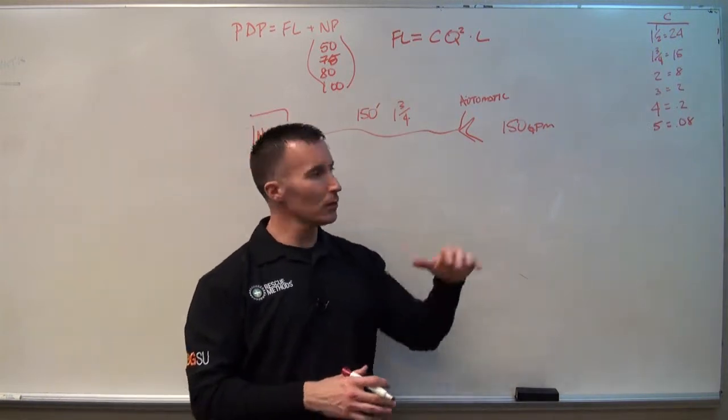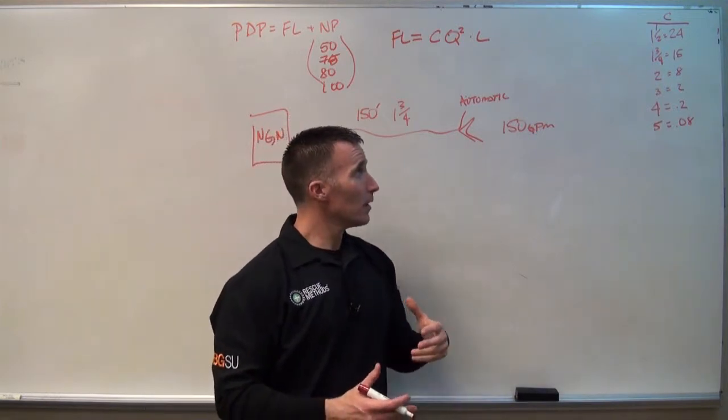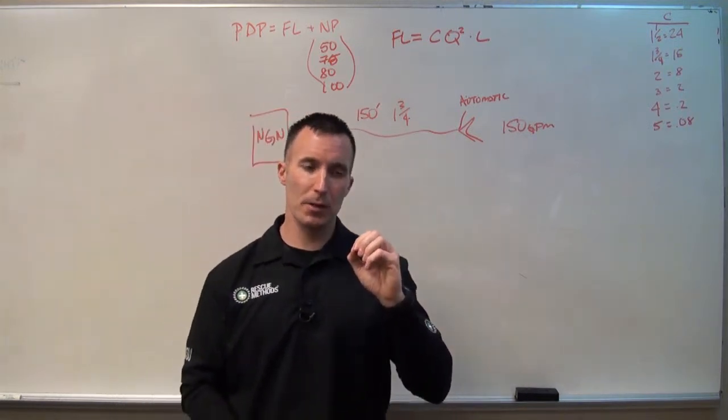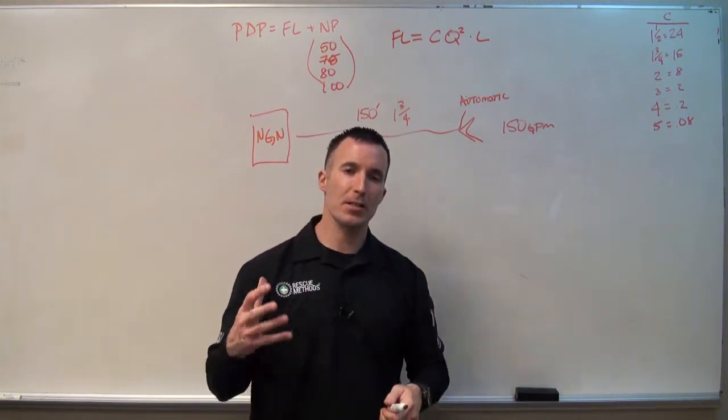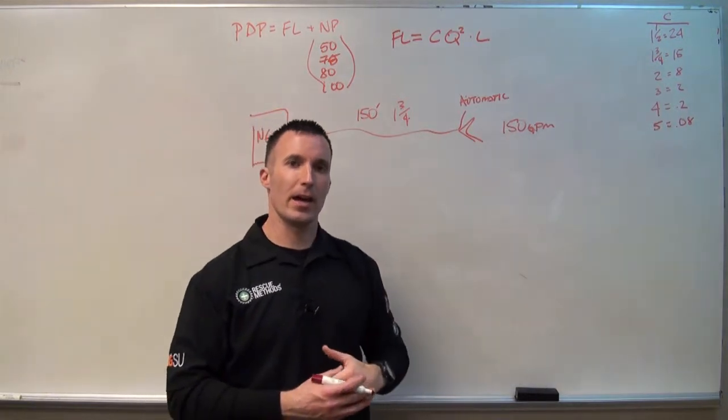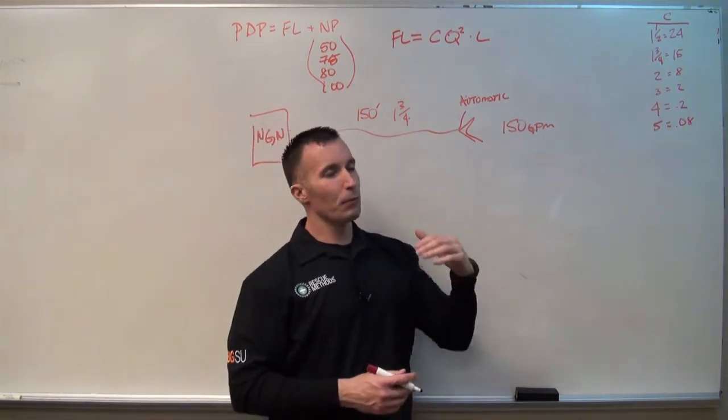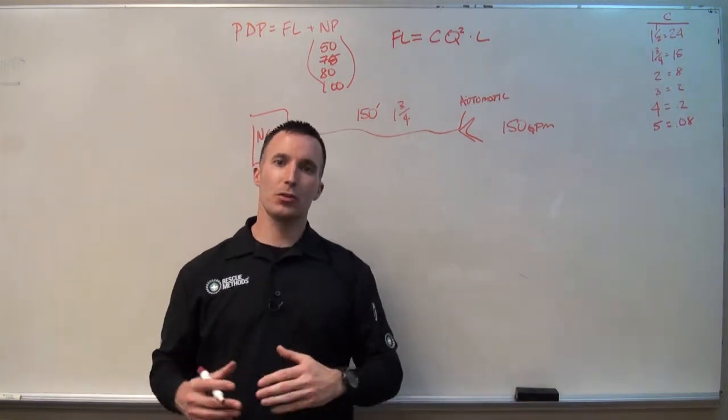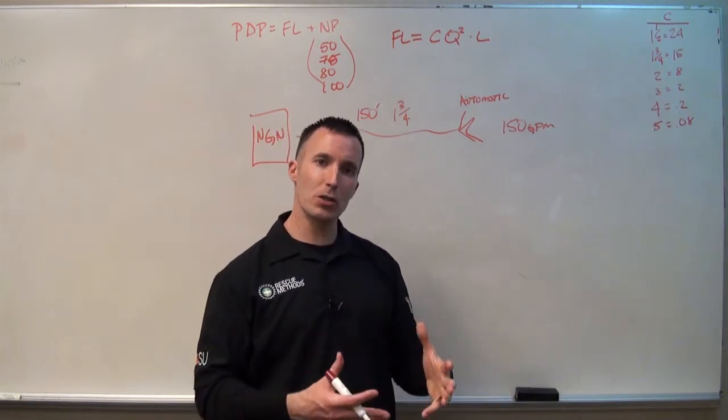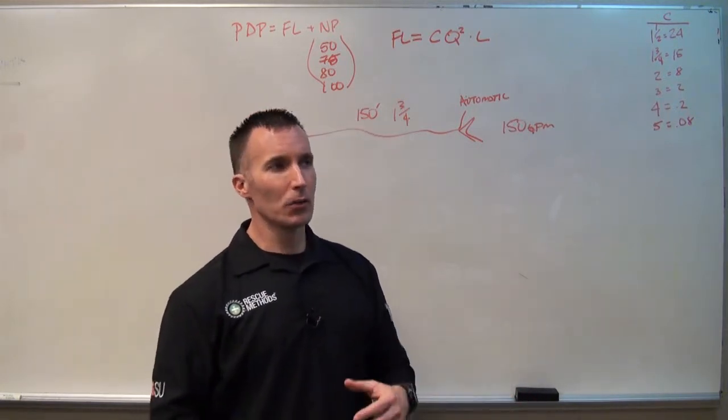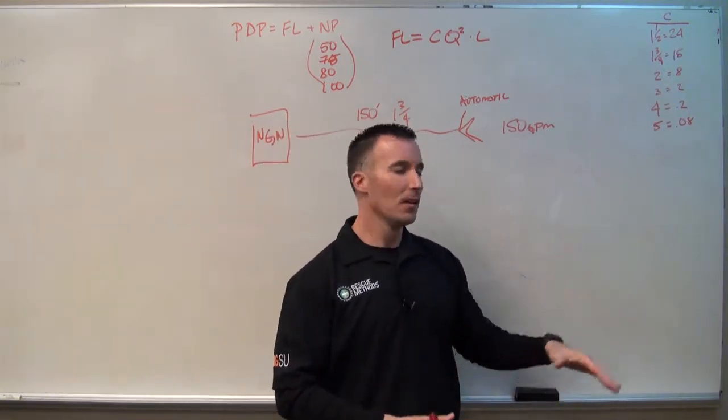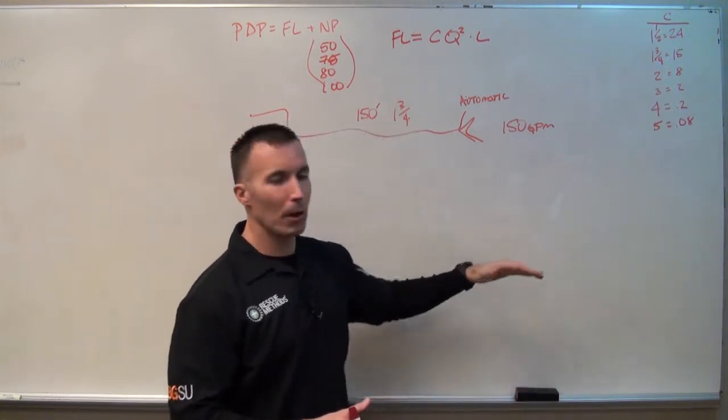Now I want to take a second and talk about the coefficients. It's important for us to recognize and understand that these coefficients are the generally accepted term. In most cases, if you have hose that's been built or made within the last 10 years, the likelihood is very high that your actual coefficient is going to be lower than that. What you produce on paper and what you get on the street are often going to be two different numbers. Most of the time, your number on paper will probably be higher in terms of friction loss than what you're actually generating on the street. I can't overstate the importance of testing the numbers we come up with on paper.